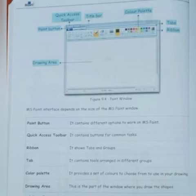You can easily see on your book figure number 9.4 that shows the paint window. It has different components like drawing area that is used for drawing, paint button, quick access toolbar, title bar, color palette, tabs and ribbon. These are different components of a paint window and they are explained below in the chart on your book.